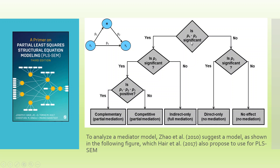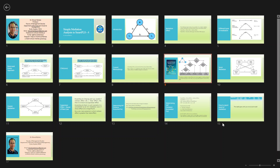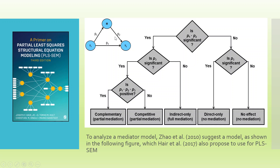If P1 times P2 is significant but P3 is not significant, it means the direct route is absent — the child cannot approach the father directly — and this is a clear case of full mediation, indirect only. If P1 times P2 is not significant but P3 is significant, it means the indirect effect is completely absent and there is only a direct effect — no mediation. In the last case, if both P1 times P2 and P3 are insignificant, there is no effect at all.